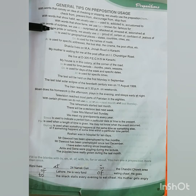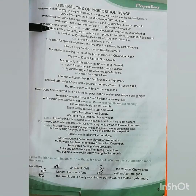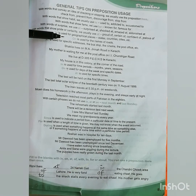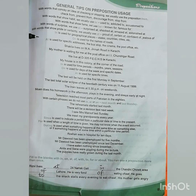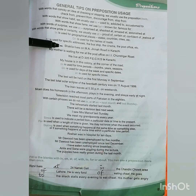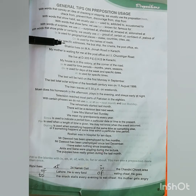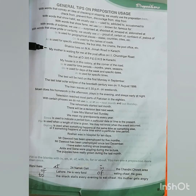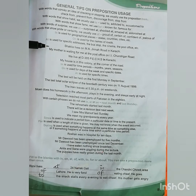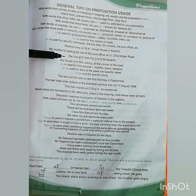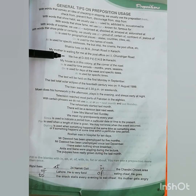'In' is used for geographical places — states, countries, cities, etc. 'On' is used for the names of roads. 'At' is used for specific addresses — the bus stop, the cinema, the post office, etc. For example: Shakila lives on M.A. Jinnah Road in Karachi. My mother is waiting for me at the post office on I.I. Chundrigar Road.